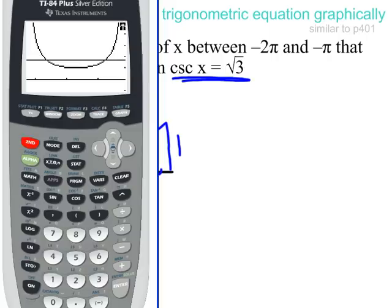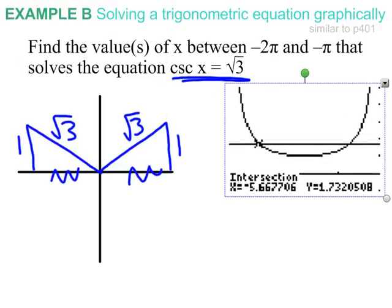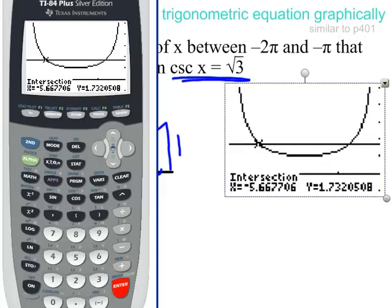Alright, so second calc, number 5, intersect. Enter, enter. Scroll a little bit to the left to get my first point. Enter. And negative 5.667. I'm going to pull that out here. Enter, second calc, intersect, scroll to the right. Oops, I'm sorry, I messed myself up. First curve, second curve, now scroll to the right. I was wondering why that cursor wasn't moving. Alright, hit enter. There is our second answer.